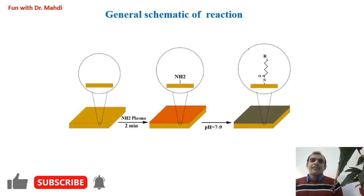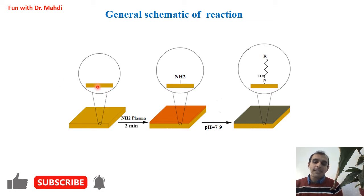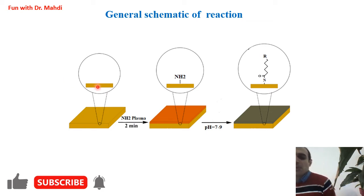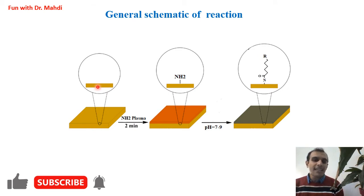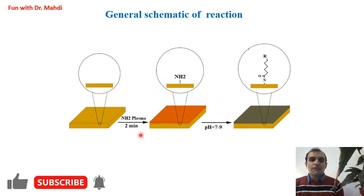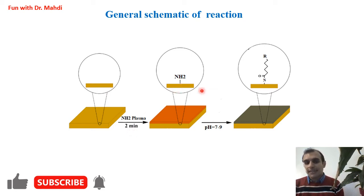Here, in this slide, you can see a general schematic for doing this reaction. First, we need to cover the surface of the substrate with amine. The substrate can be everything — it can be gold, silicon, glass, diamond, and everything else. For this purpose, we can use plasma — we can use ammonia plasma — and after two minutes, we will have a lot of amine on the surface.